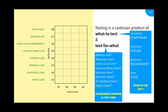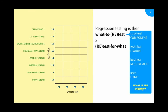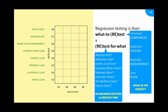So this is the cleanliness criteria we want to test for. Testing is a Cartesian product of what you want to test and what you want to test for. Regression testing can therefore be seen as 'what to retest' crossed with 'retest for what' — meaning what entities should I retest, and for those entities, what criteria should I retest for? Which of these cells should we focus on? That's really what regression testing is.